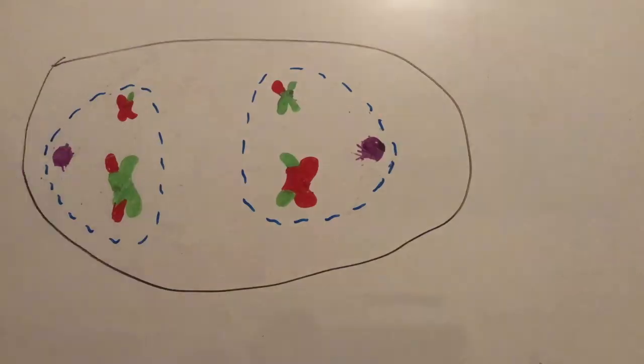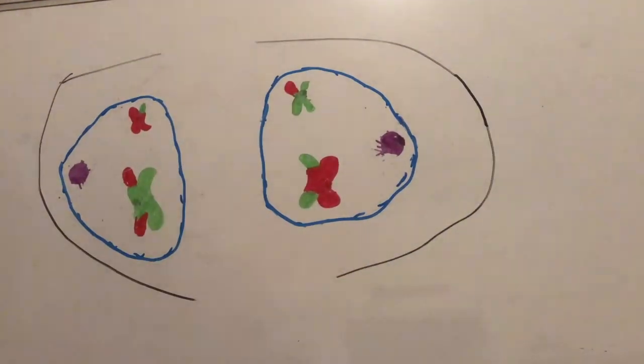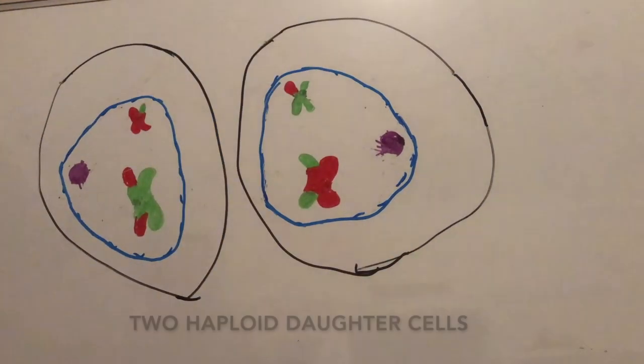Membrane forms around the two nuclei in telophase 1, followed by the cleavage furrow creating two haploid daughter cells in cytokinesis.